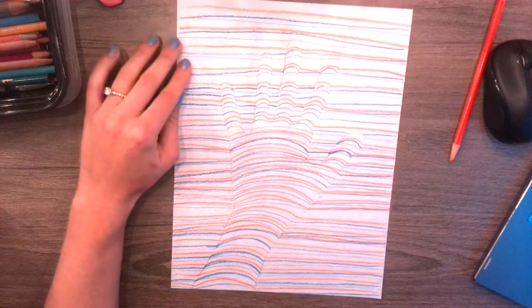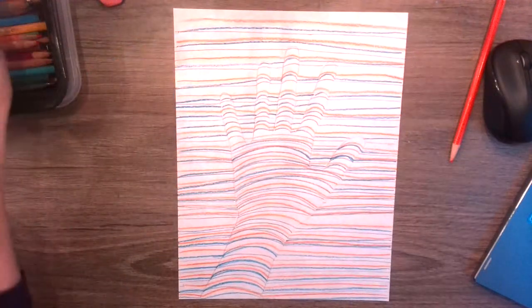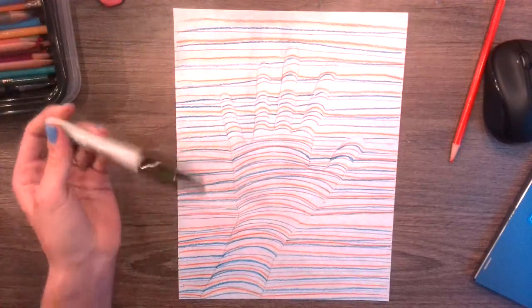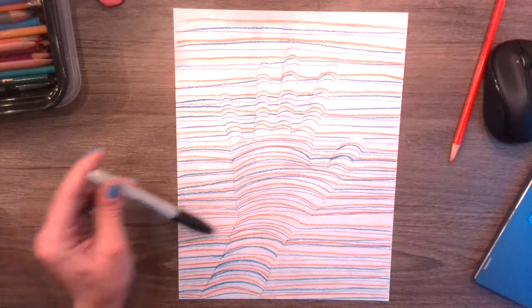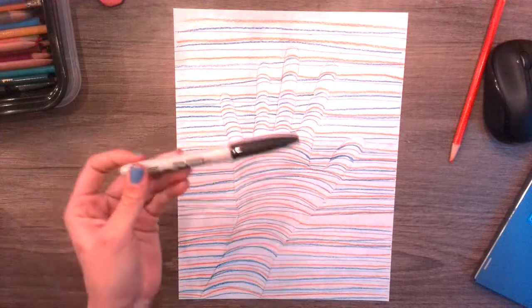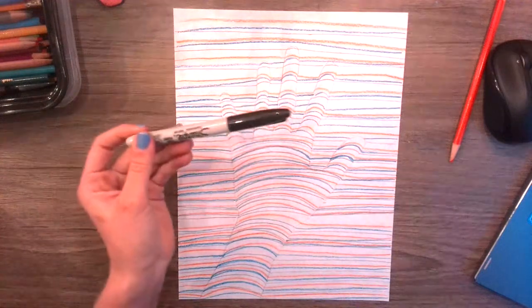All right. So the last step would be using a black marker or a black pen to outline your pencil lines. So I'm going to do that and then show you what that looks like.